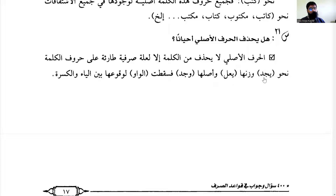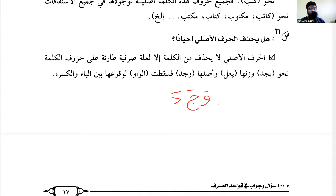For example, the word يَجِدُ (yajidu). Its root is وَجَدَ (wajada), which contains WAW, JIM, and DAL. So why did we drop the WAW? We dropped the WAW because of a rule for Mithal.